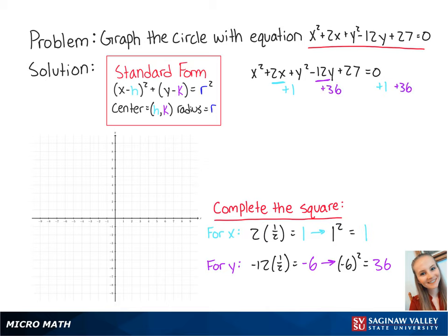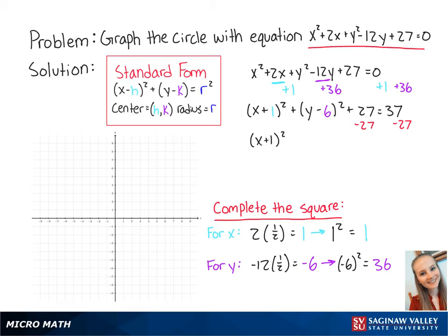So completing the square, we have x plus 1 squared plus y minus 6 squared plus 27 equals 37. To get the equation into standard form, we need to subtract 27 from both sides of the equation. So now we have x plus 1 squared plus y minus 6 squared equals 10.